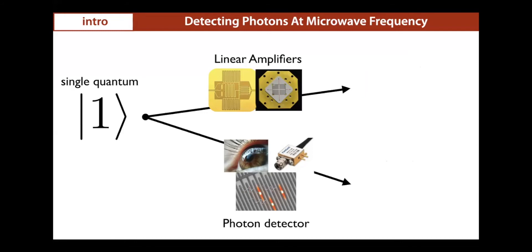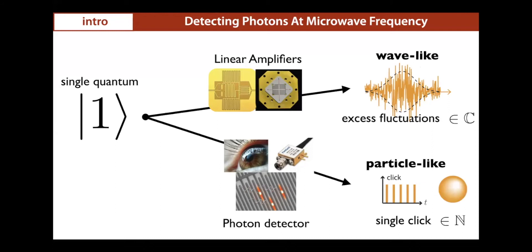Let's review another state: the single quantum excitation, the Fock state |1⟩. With a linear amplifier, you expect an excess of fluctuations because there is no phase associated with the Fock state |1⟩ — you observe a rise in quantum fluctuations. However, with a photon detector, in the ideal case you observe a click each time this single Fock state hits the detector. So in one case you have excess fluctuations; in the other you have a noiseless signal. Photon detection is clearly superior for detecting this kind of signal.